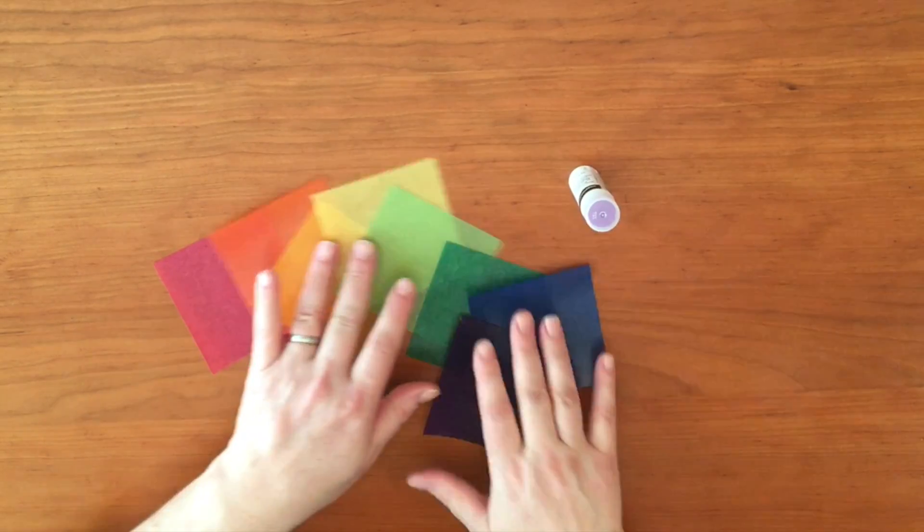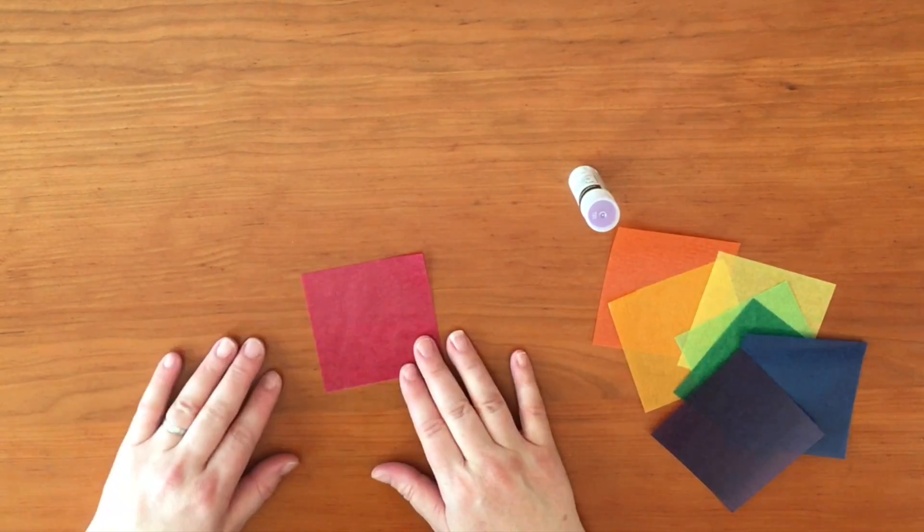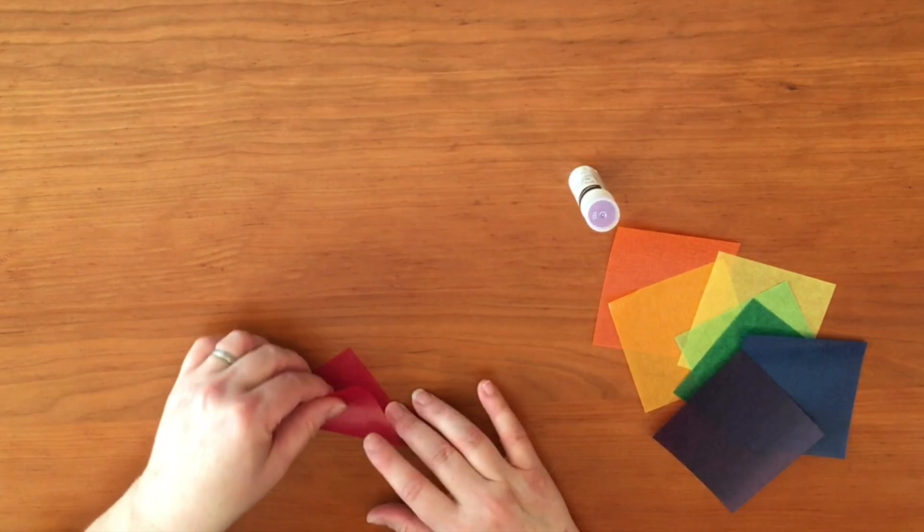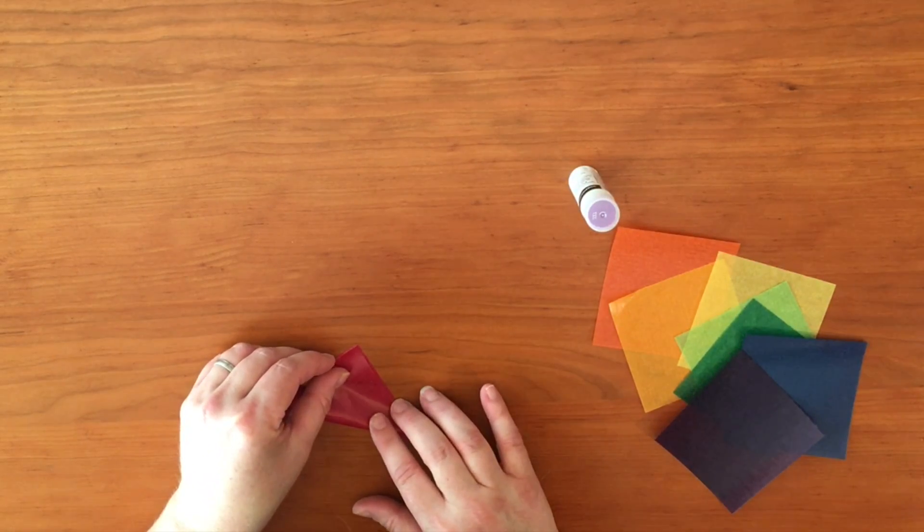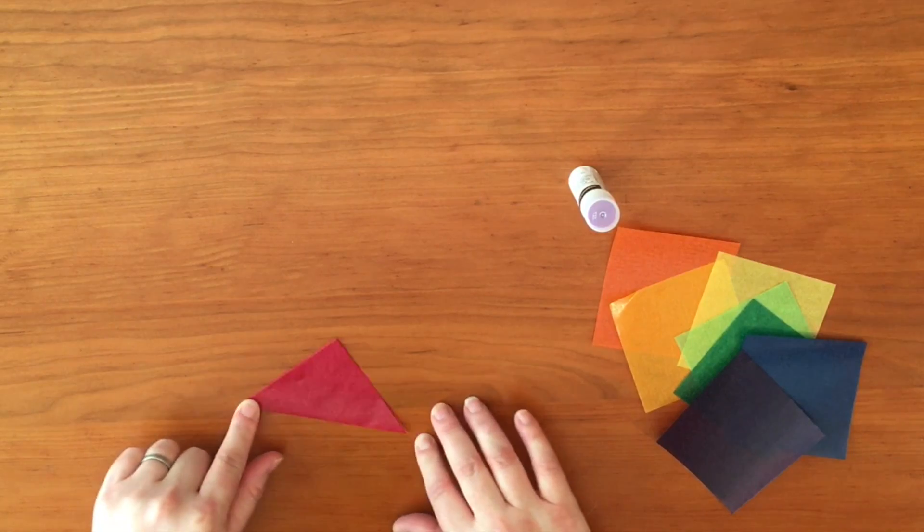So the first color we're going to do is red and we start by folding the paper in half. Line up your corners and you're going to fold it on the diagonal.